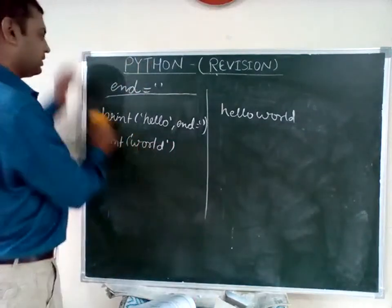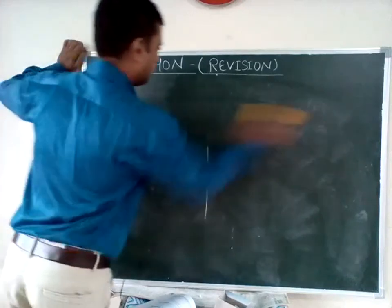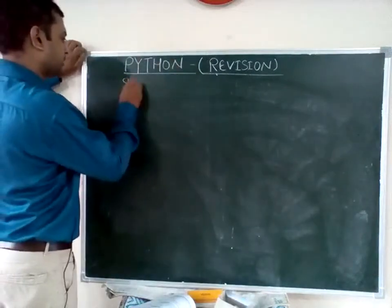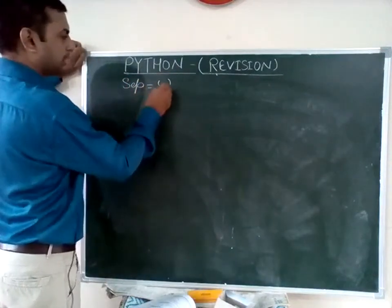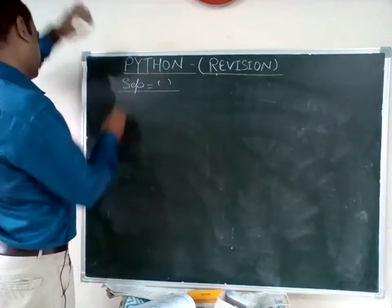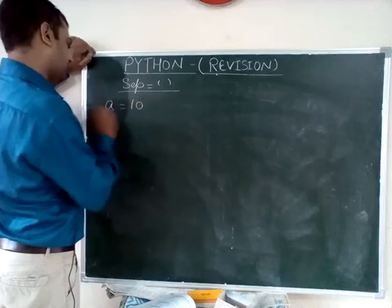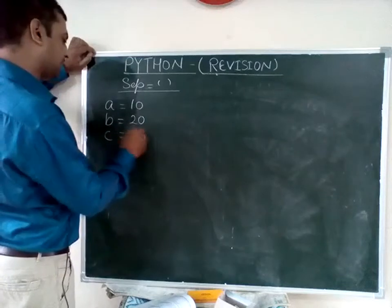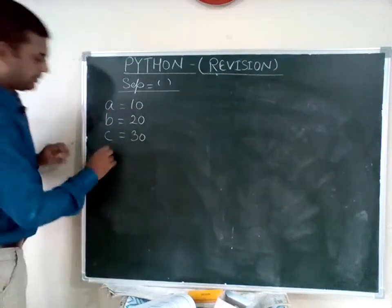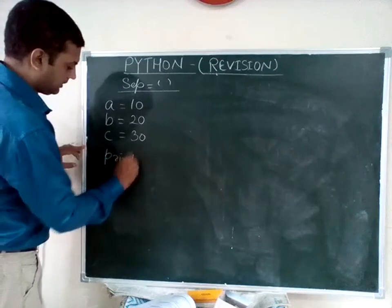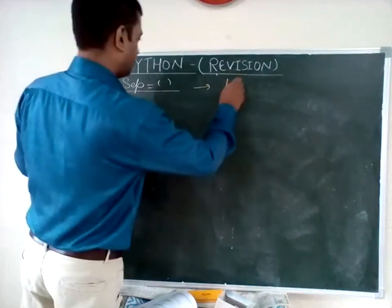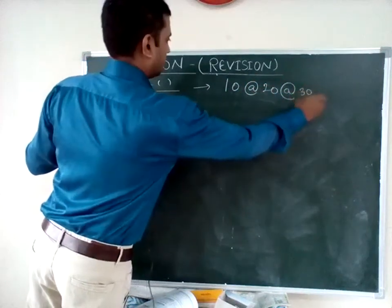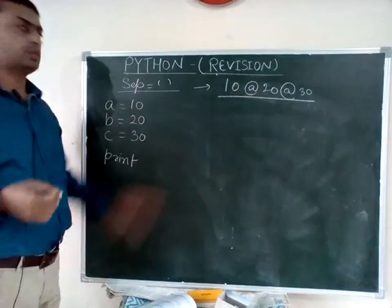Next is our sep function — this is very interesting. What is sep? You can use any character here. If a is 10, b is 20, c is 30, and simply you want to produce the output like 10 @ 20 @ 30 — this output should come. So how will you produce this kind of output?